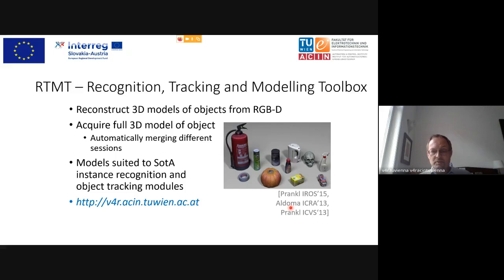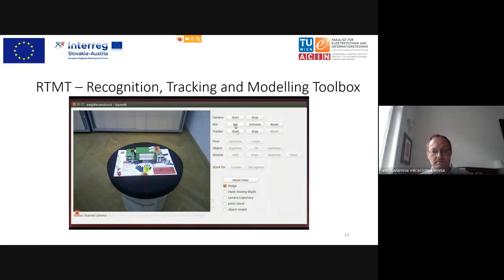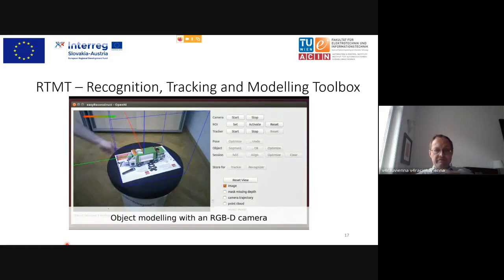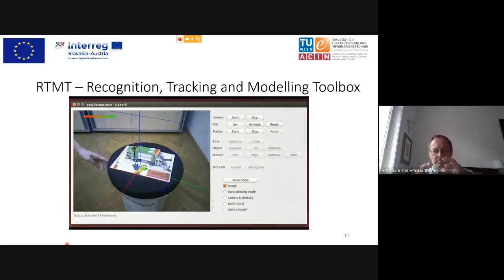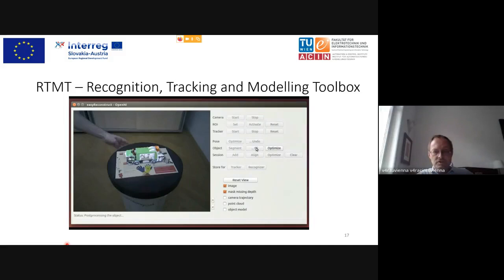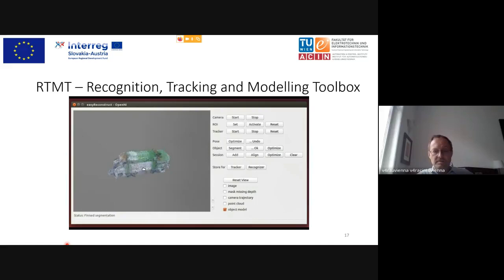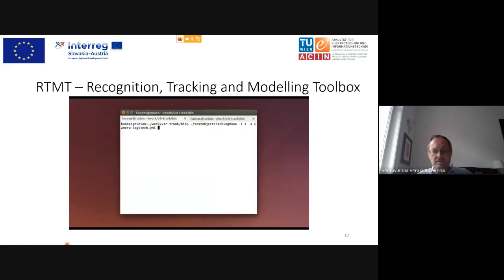One of the things we do — and the software is free — is RTMT: the Recognition Tracking and Modeling Toolbox. The idea is you take some textured background, put the object on top, and rotate it. We take the planar surface as the support plane and whatever is on top we use as the model — the model itself can be uniform and doesn't need any texture. We create the full 6D model as a textured point cloud with edges and interest points.